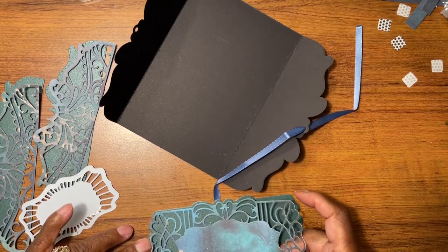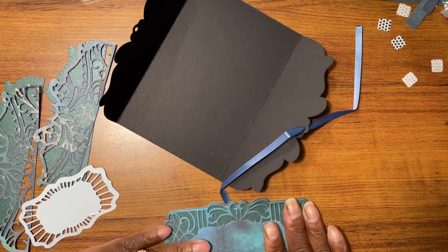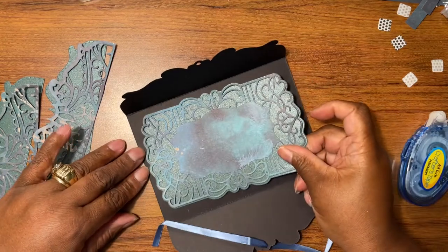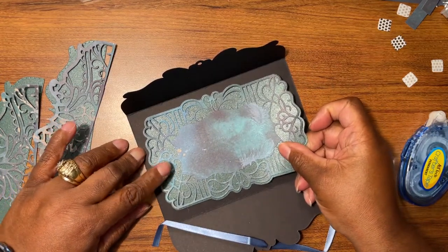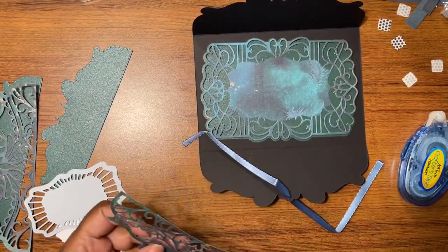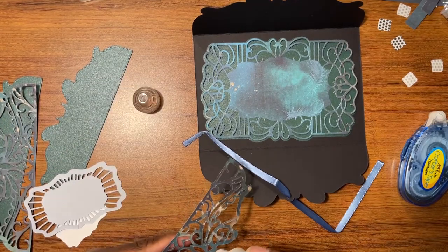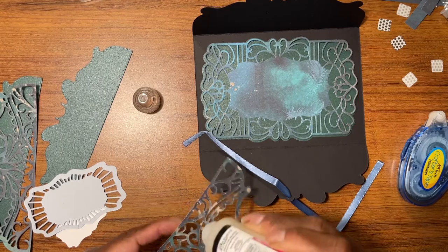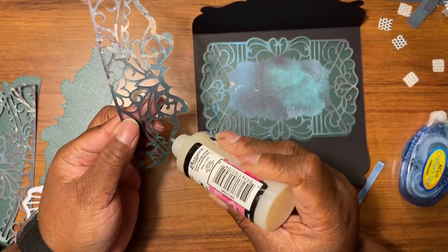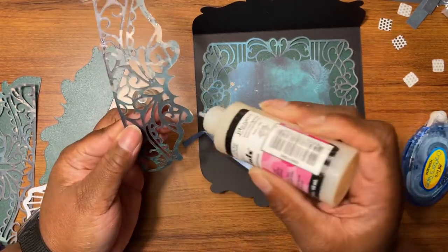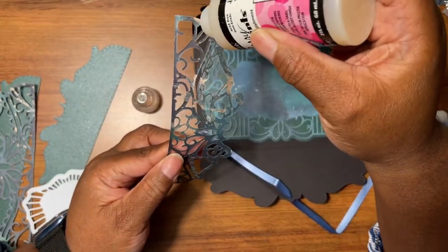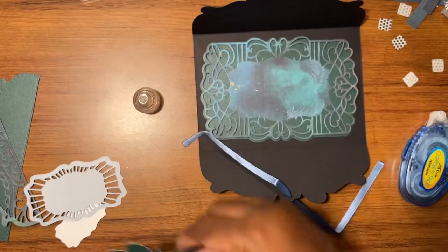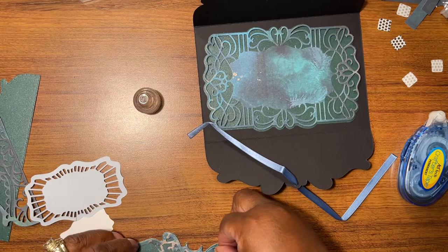First things first, let's mat and layer this piece. Then we're going to take this one and this gets matted and layered right in there. Then this piece, we're going to use some glossy accents to glue these down. I have had glossy accents, some of these bottles you could probably tell because they're yellowed, for a long time. But they still work, they still adhere, it's still good. The hole gets stuck, but besides that, this glossy accents works like a champ.